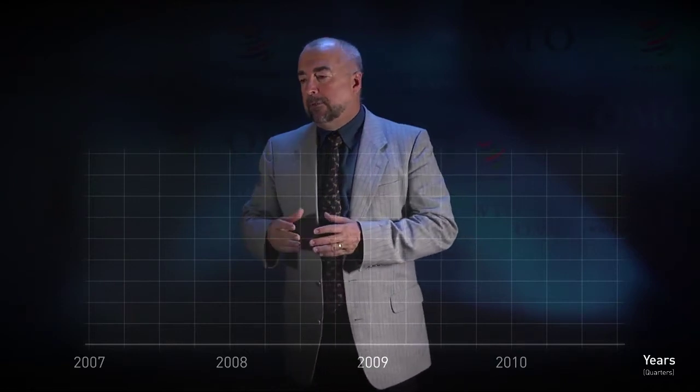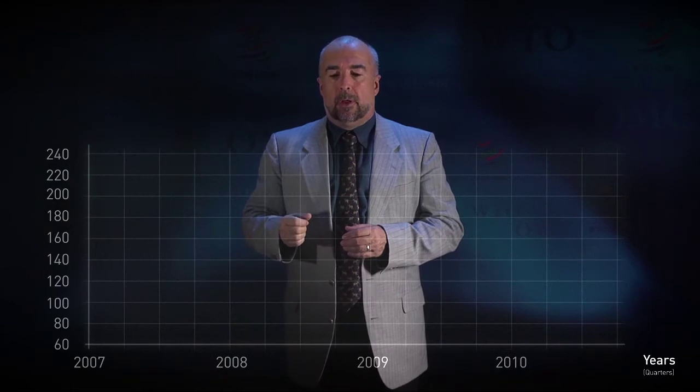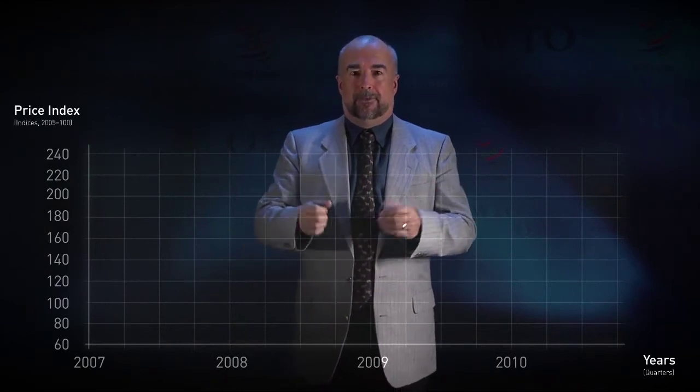The evolution of trade before, during, and after the crisis was closely related to changes affecting the international prices of commodities. In order to visualize the evolution of these prices, we'll have a chart very similar to the one we had before. On the horizontal axis, we'll have the passing of time from the first quarter of 2007 up to the last quarter of 2010, and on the vertical axis we'll show the price index. We normalized all prices and put them as if they were all equal to 100 in 2005, making the comparison of prices much easier.